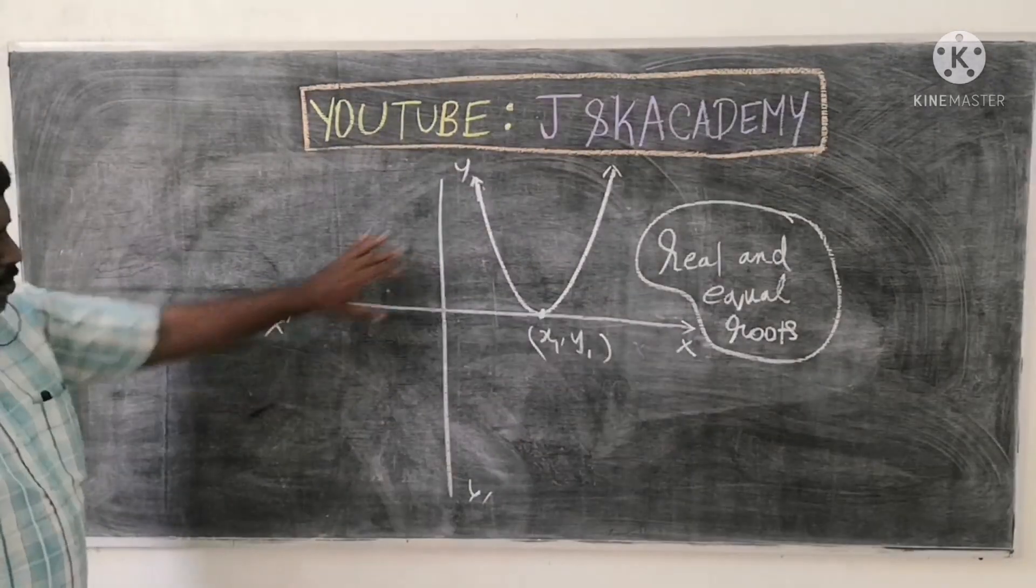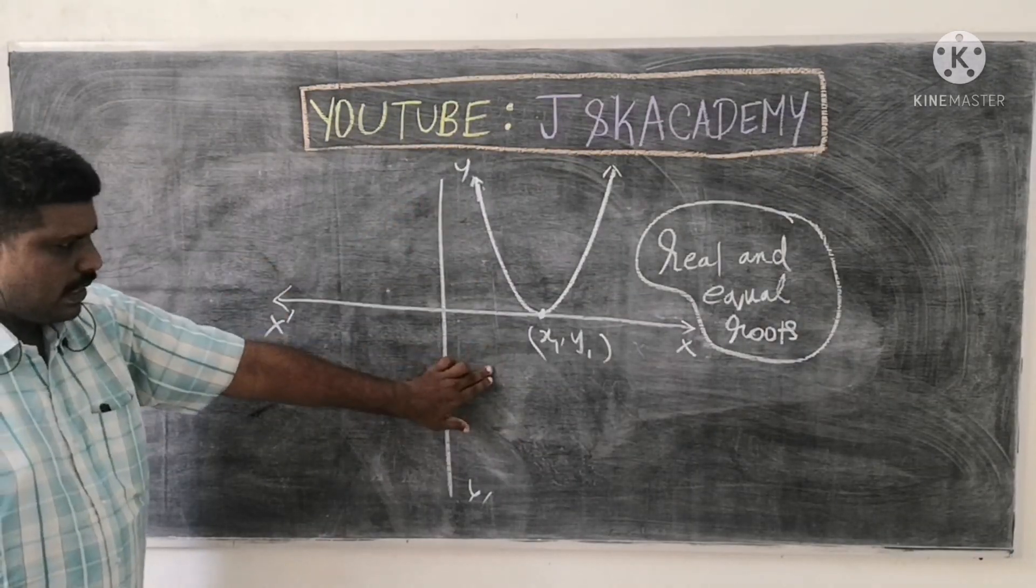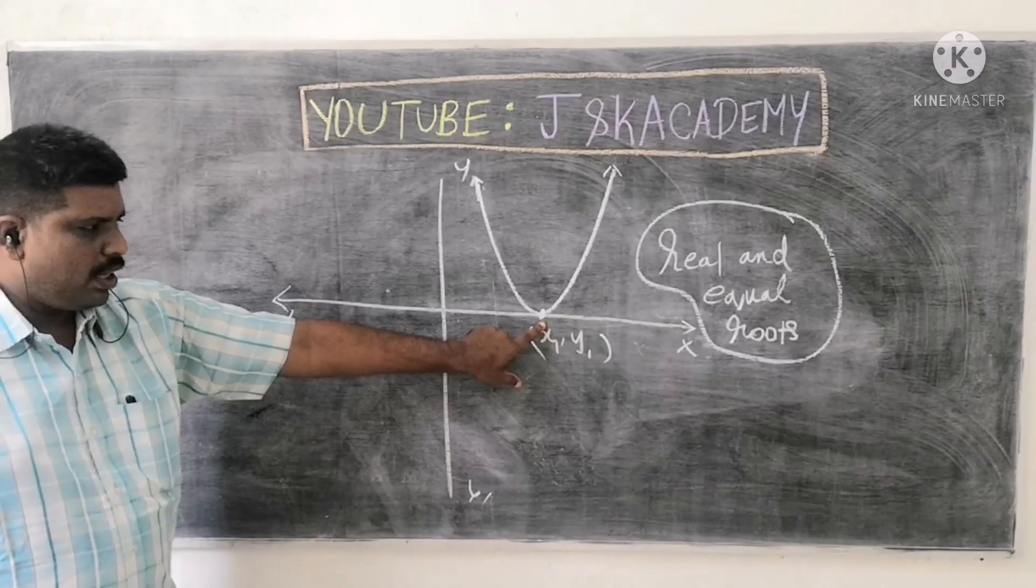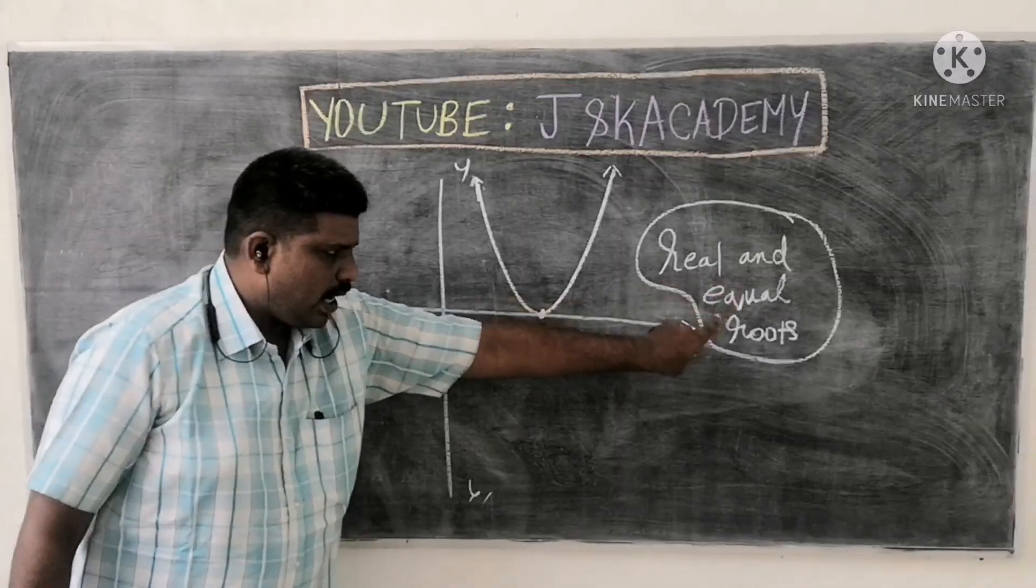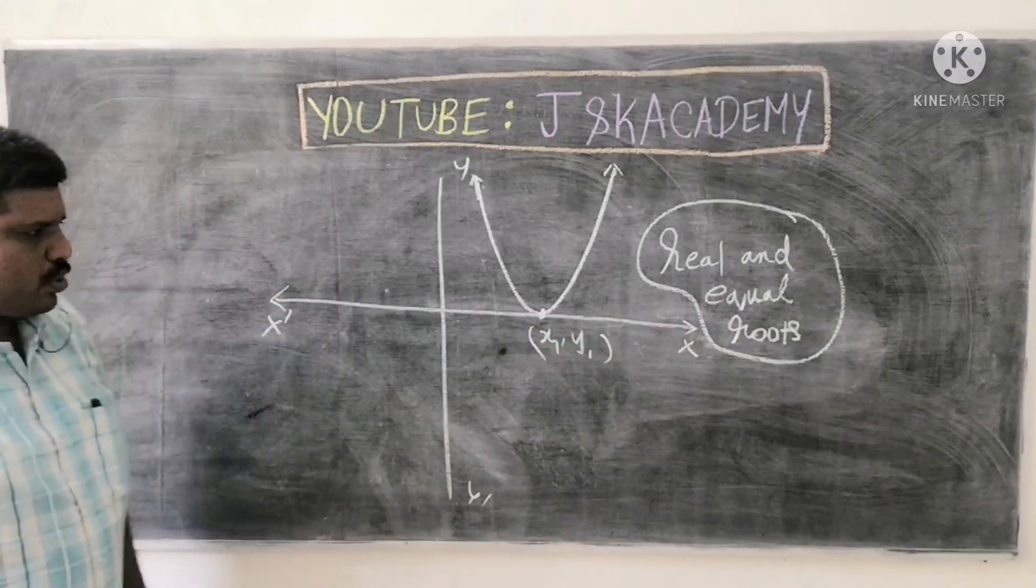So this Parabola, x axis, one point intersected. It is called as real and equal roots.